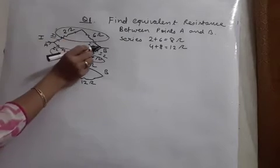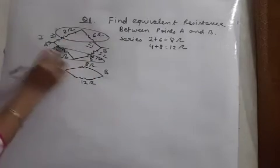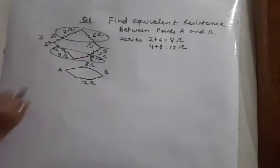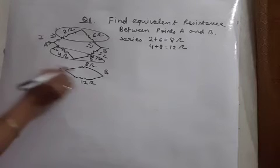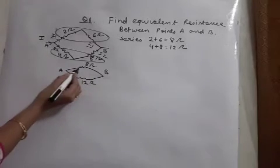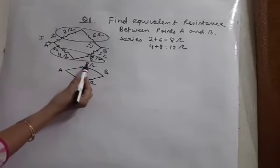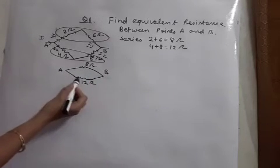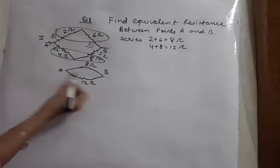Now between AB, upper part 8 ohm, between AB lower part is 12 ohm. Now you have to just look at the two resistances. Are they in series or parallel? They are in parallel because their two ends are common. Two ends common means 8 ohm's left side and right side, and 12 ohm also left side and right side, both are connected common.